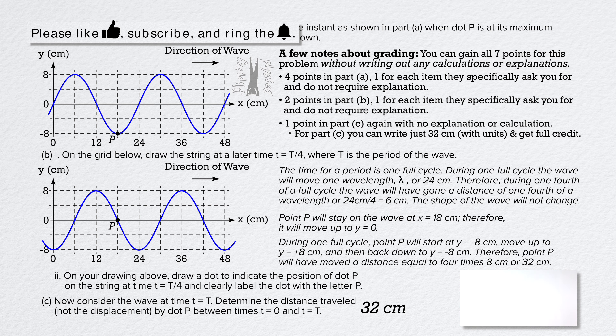Let's talk about how this question was graded. You can gain all seven points for this problem without writing out any calculations or explanations. Four points in part A — one for each item they specifically ask you for — and they do not require explanation. Two points in part B, one for each item, and no explanation required. One point in part C — again, with no explanation or calculation. In fact, for part C, you can write just 32 centimeters with units and get full credit. I actually do suggest you write down your calculations — even if they are as simple as 4 times 8 equals 32 centimeters — and then circle your answer. You are much less likely to make mistakes and lose points if you write down your calculations.